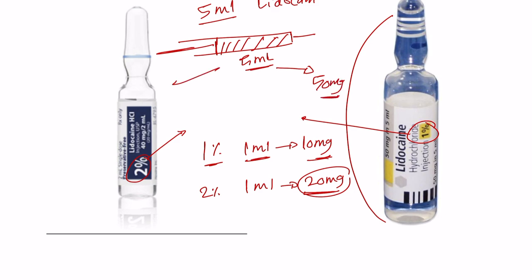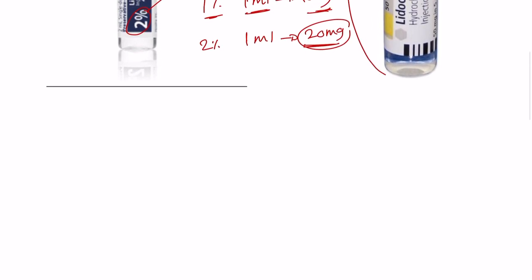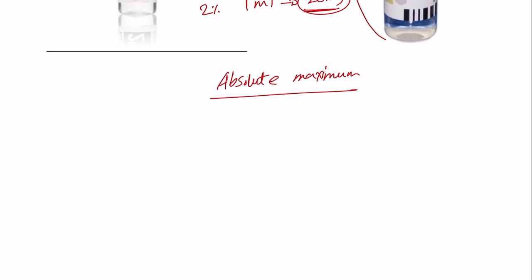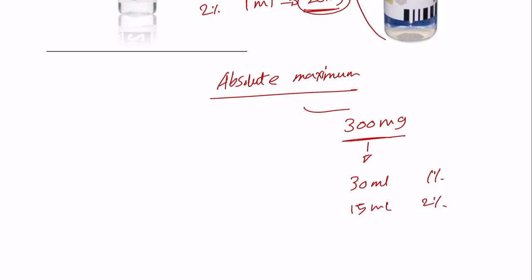So 5 ml of the 1% will contain 50 mg of lidocaine. On the other side, 5 ml of the 2% will contain 100 mg of lidocaine. Now you know what you're asking for. The next question: what is the absolute maximum dose of lidocaine that you can give to your patient? The absolute maximum is around 300 mg — that's approximately 30 ml of the 1%, or 15 ml of the 2%.